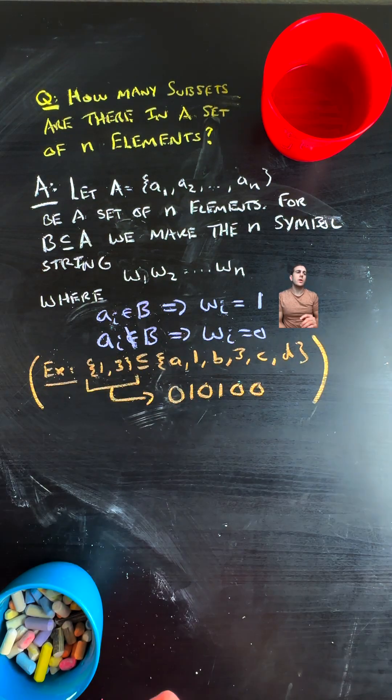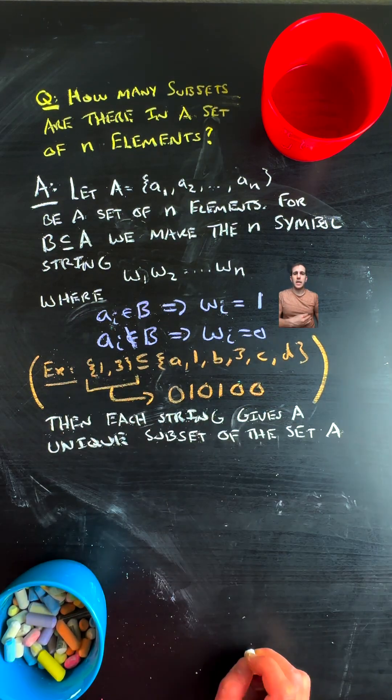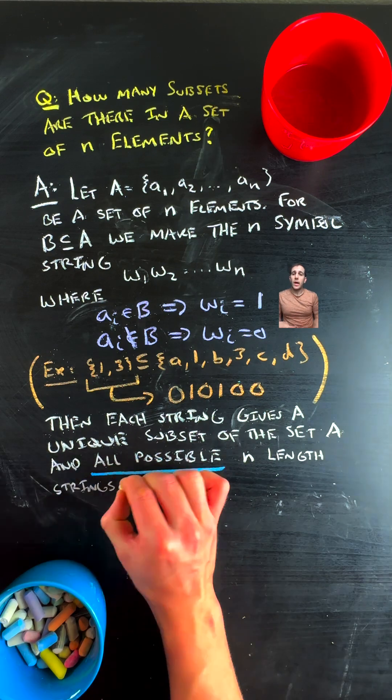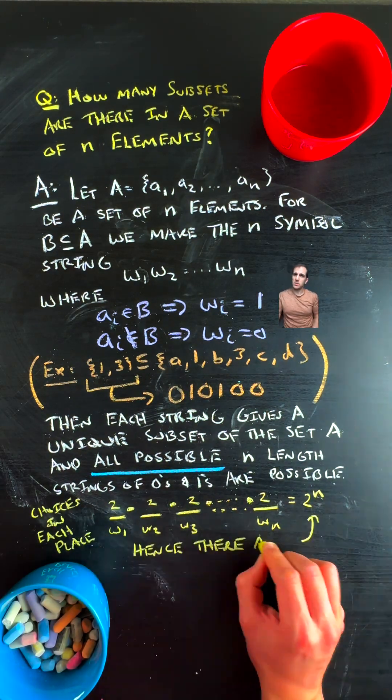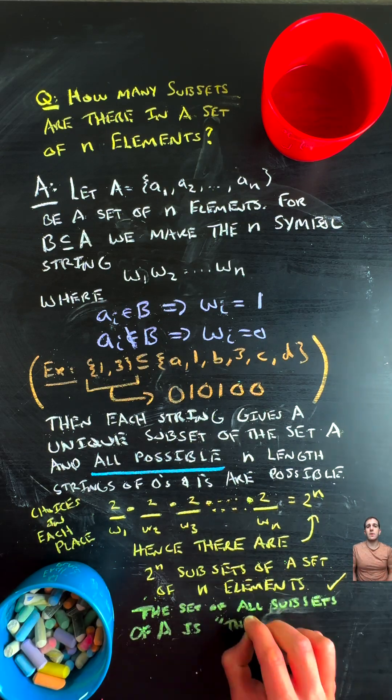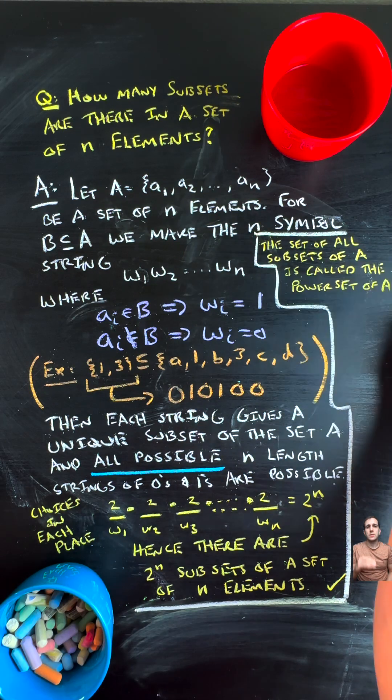And since you can have a zero or one for every element in your original set, you have essentially two choices for each position of the set, right? Something is in it or something is not. And that leads to having a total of two to the n subsets of your original set.